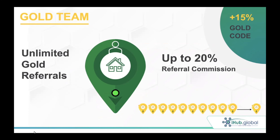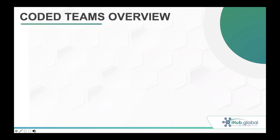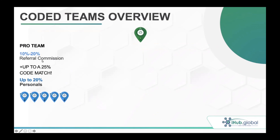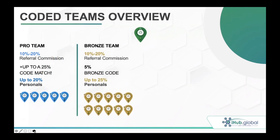Let's look at the team structure overview. Here's you, and here's your Pro team — your first five. You start at 10% referral commission for the first 90 days and can go up to 20% if you help your personally referred members get five claimed assessments in Helium Track. On your Bronze team, you get 10 to 20% referral commission plus a 5% Bronze code — up to 25% on all your Bronze personals. On your Silver team, it's 10 to 20% plus the 10% Silver code — up to 30% on all 10 of those slots. The Gold team is up to 35% because it's 20% potential referral commission plus 15% Gold code on all your personals.